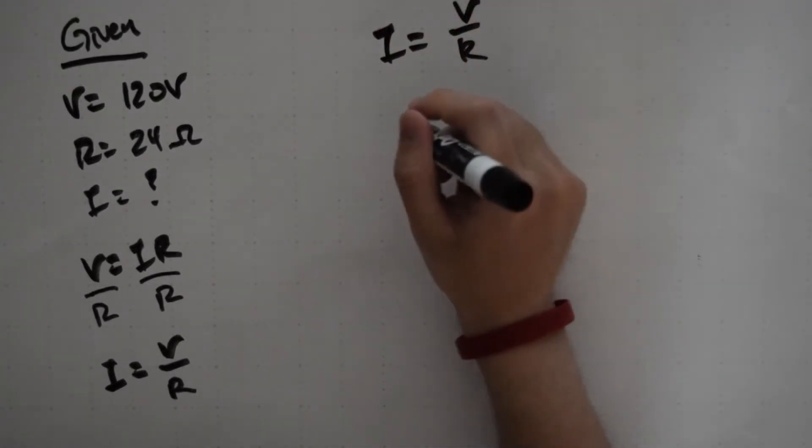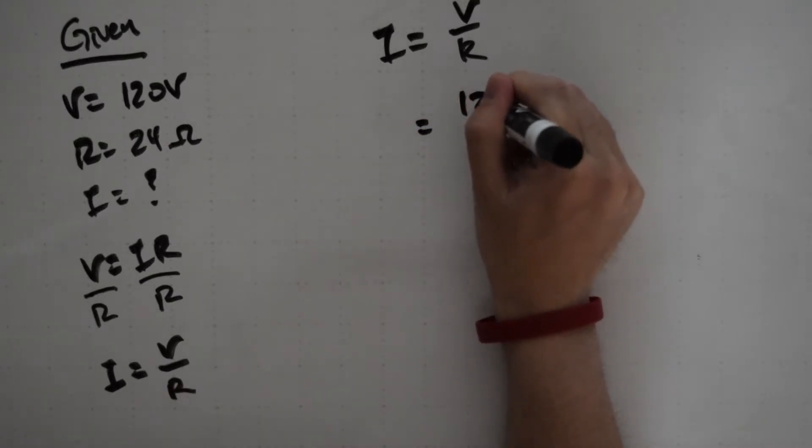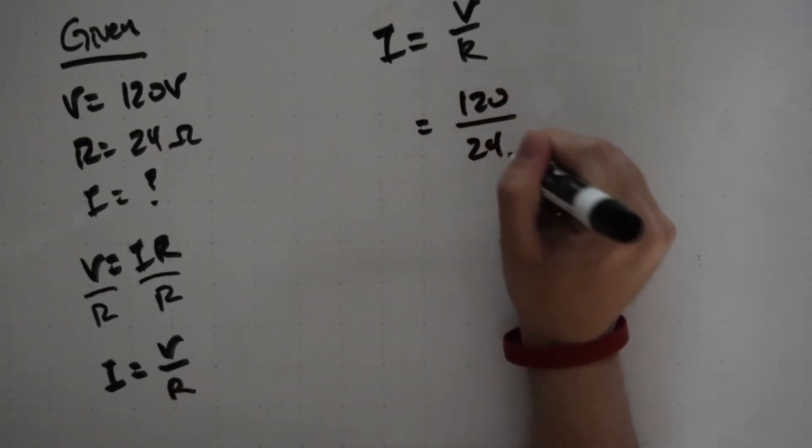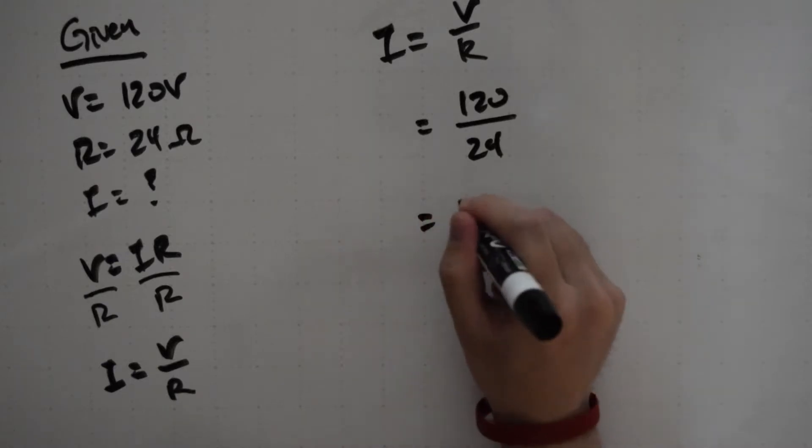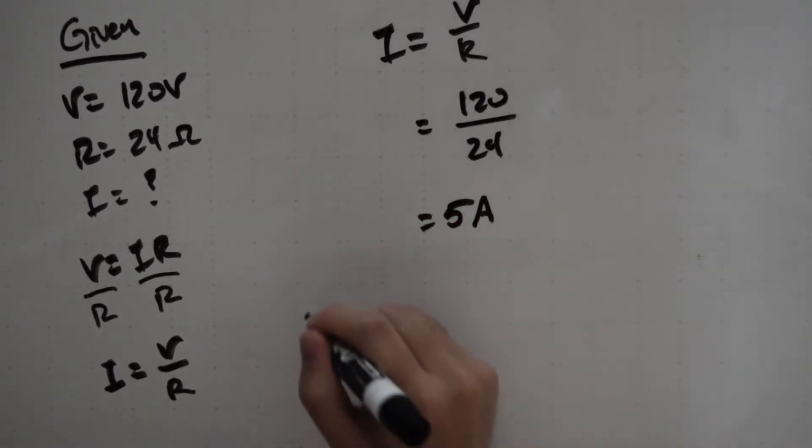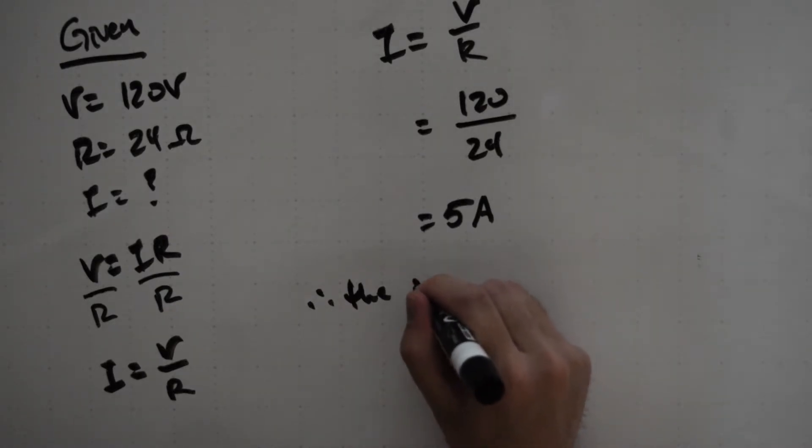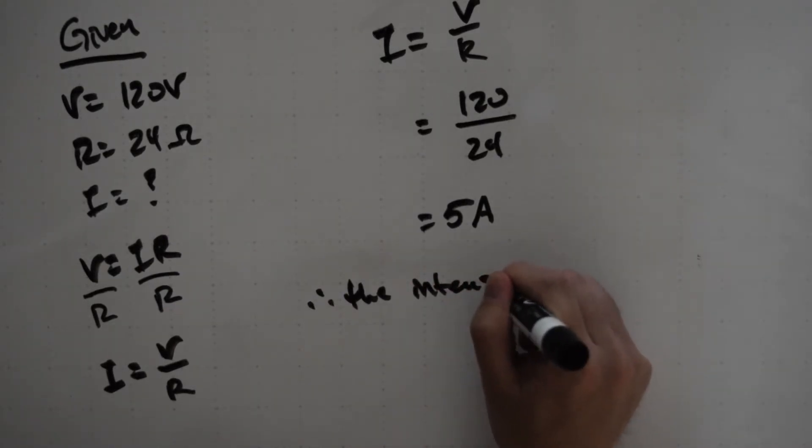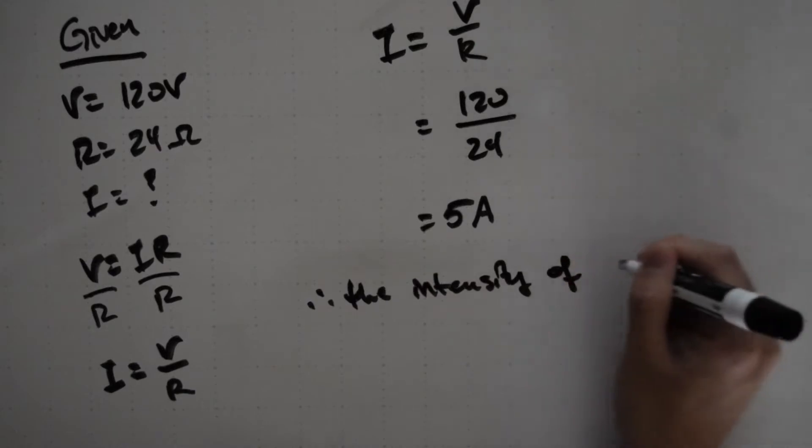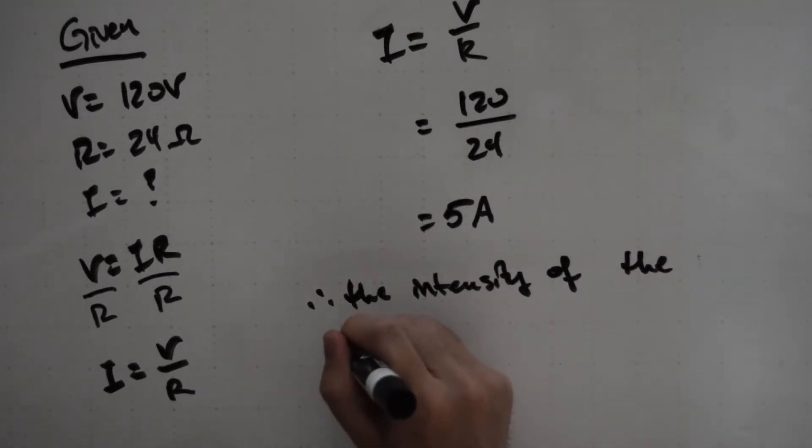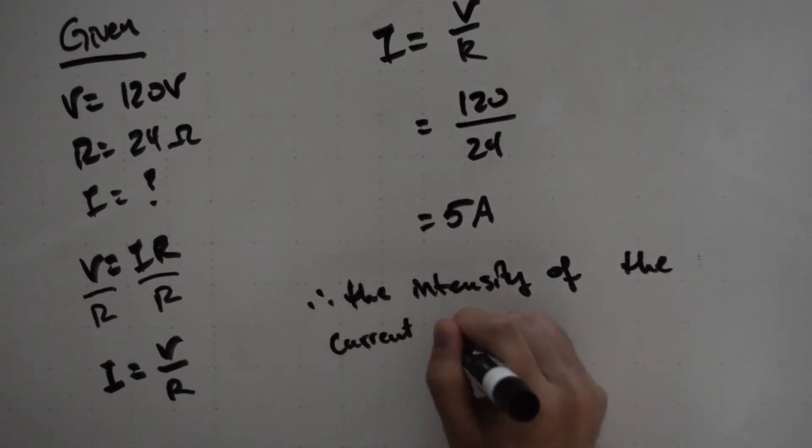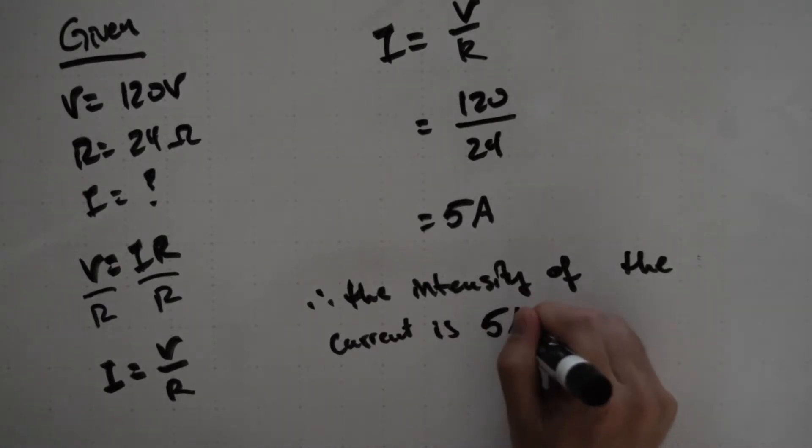We can now plug in everything we know into our equation. 120 volts divided by 24 ohms is going to leave us with a current of 5 amps. Therefore, the intensity of current is 5 amps.